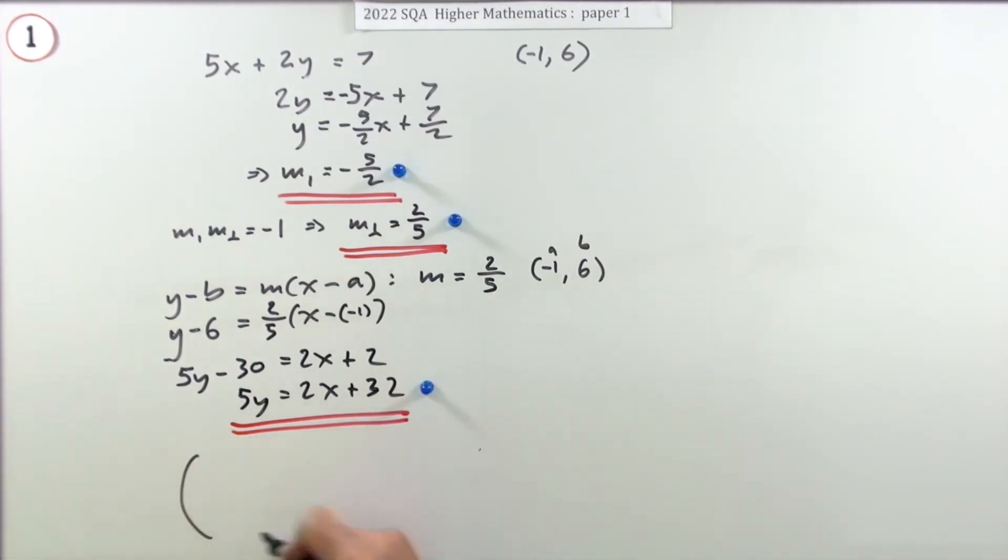Now if you wished, you could put that into any form you want. You could have it in the form of x, y equals number, so starting from this side and looking that way: 2x, bring the 5 over to join it, minus 5y would equal, put the 32 across, minus 32. Or you could put it all across: 2x minus 5y plus 32 equals 0. But that does it now.